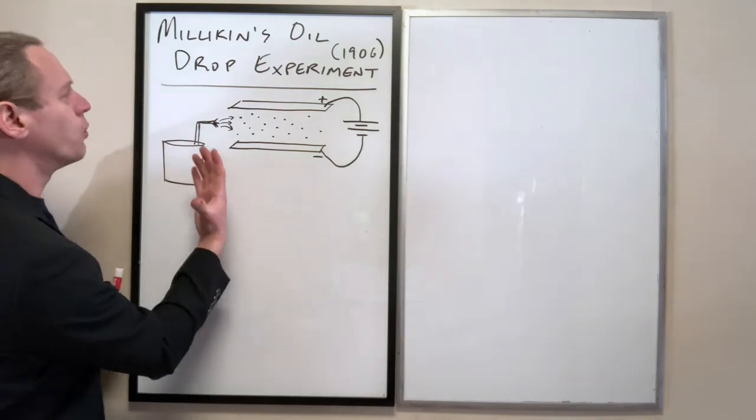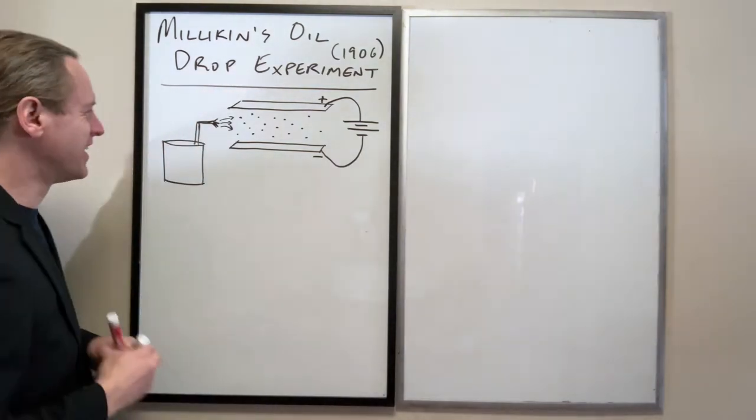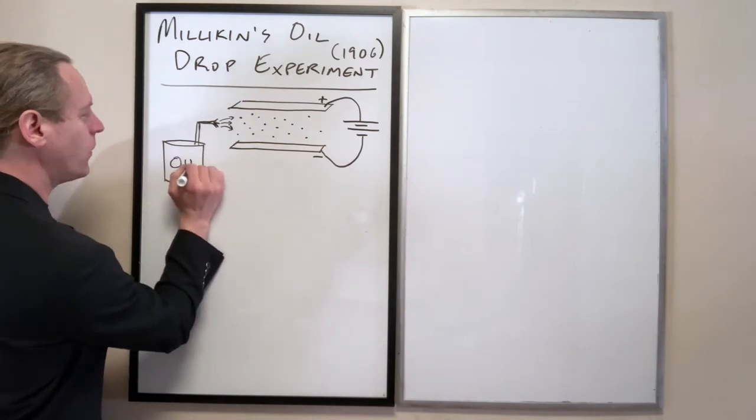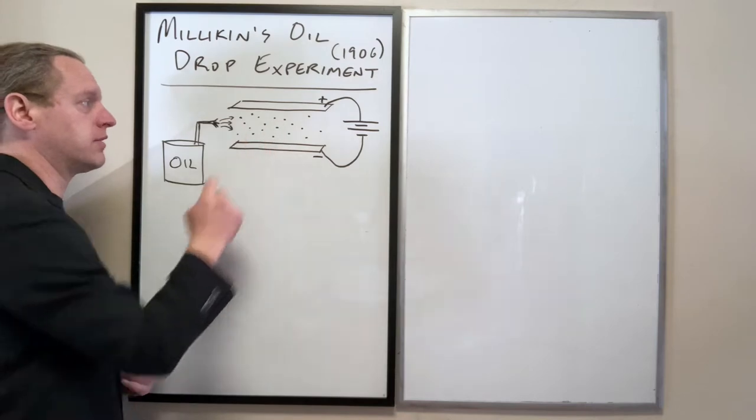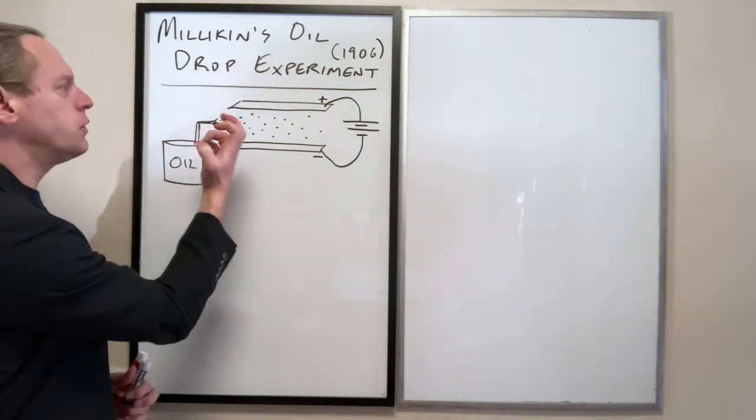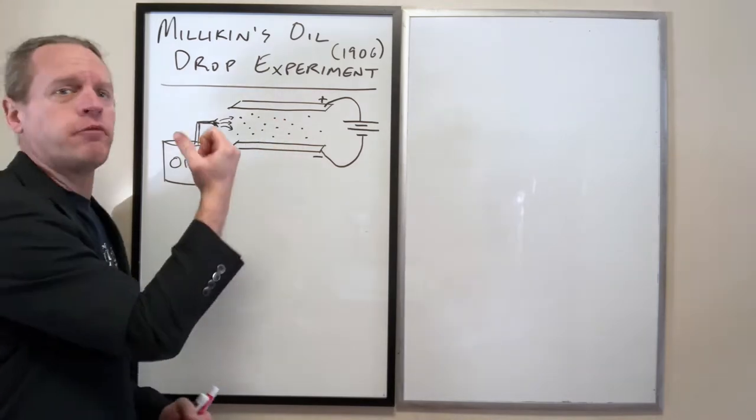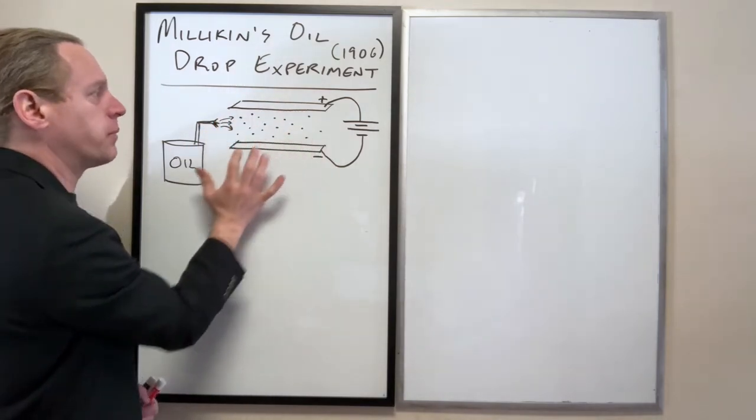So let's just talk about what we're going to do first of all. We have this oil can here, and we can spray out a very fine mist of oil droplets. And we know what density oil has, and you can at least get a statistical sample of what the known radii of these little oil droplets are.